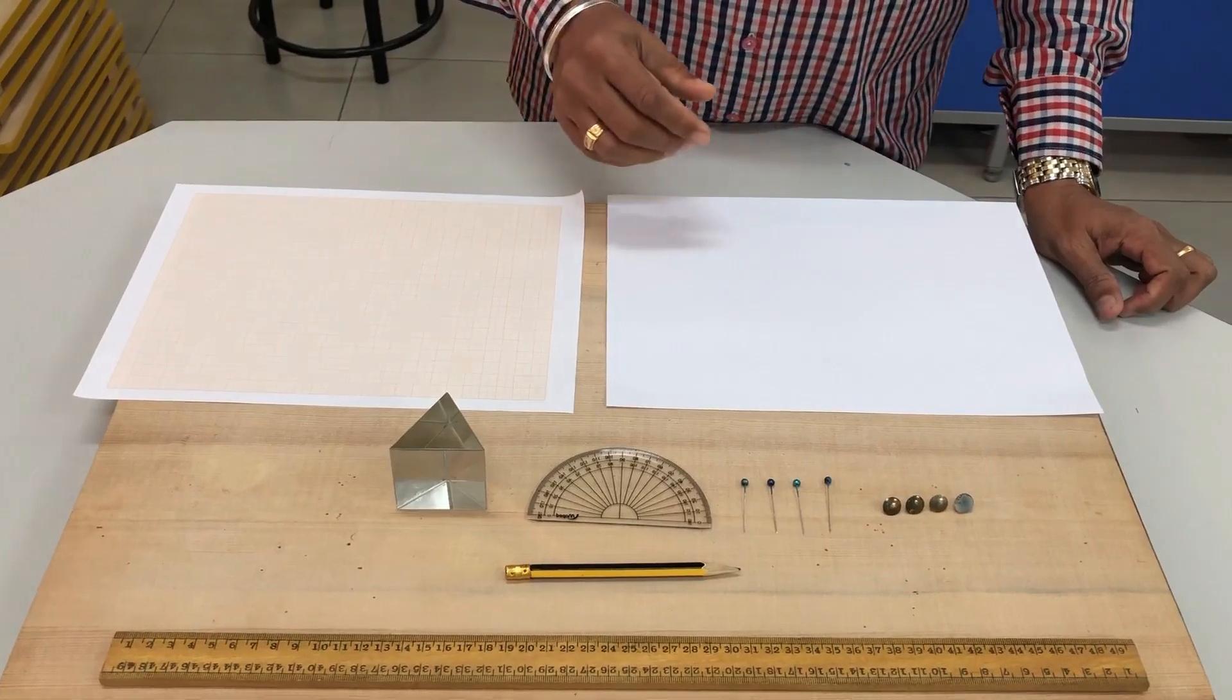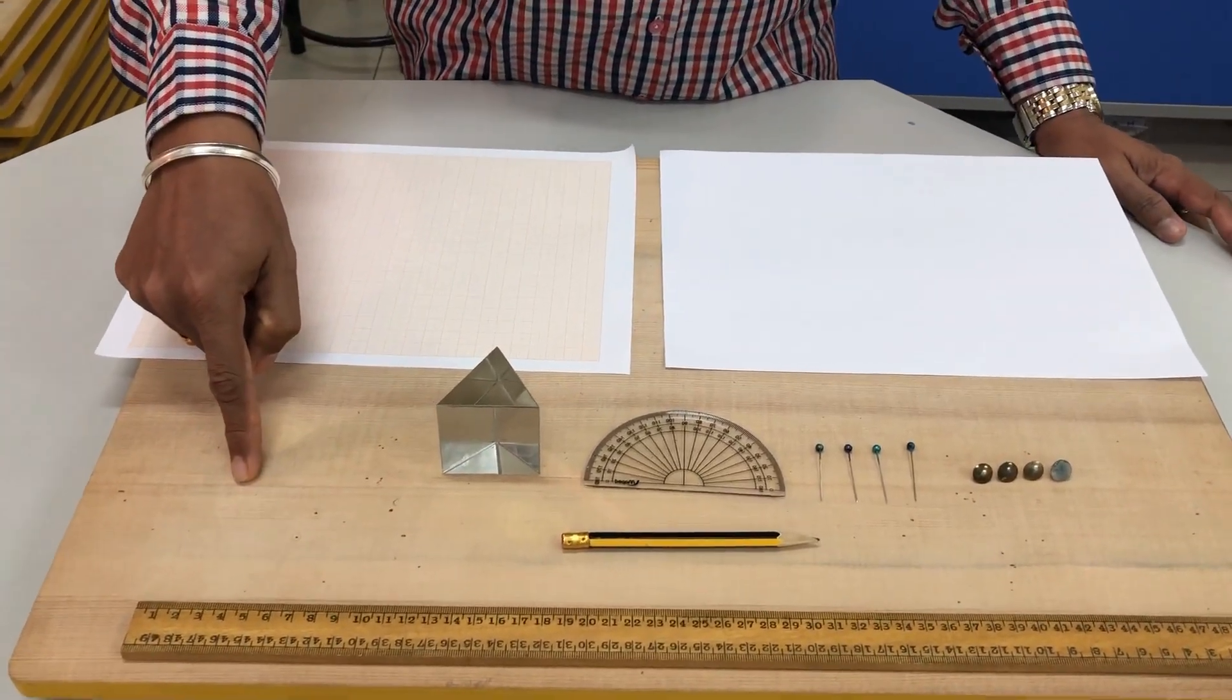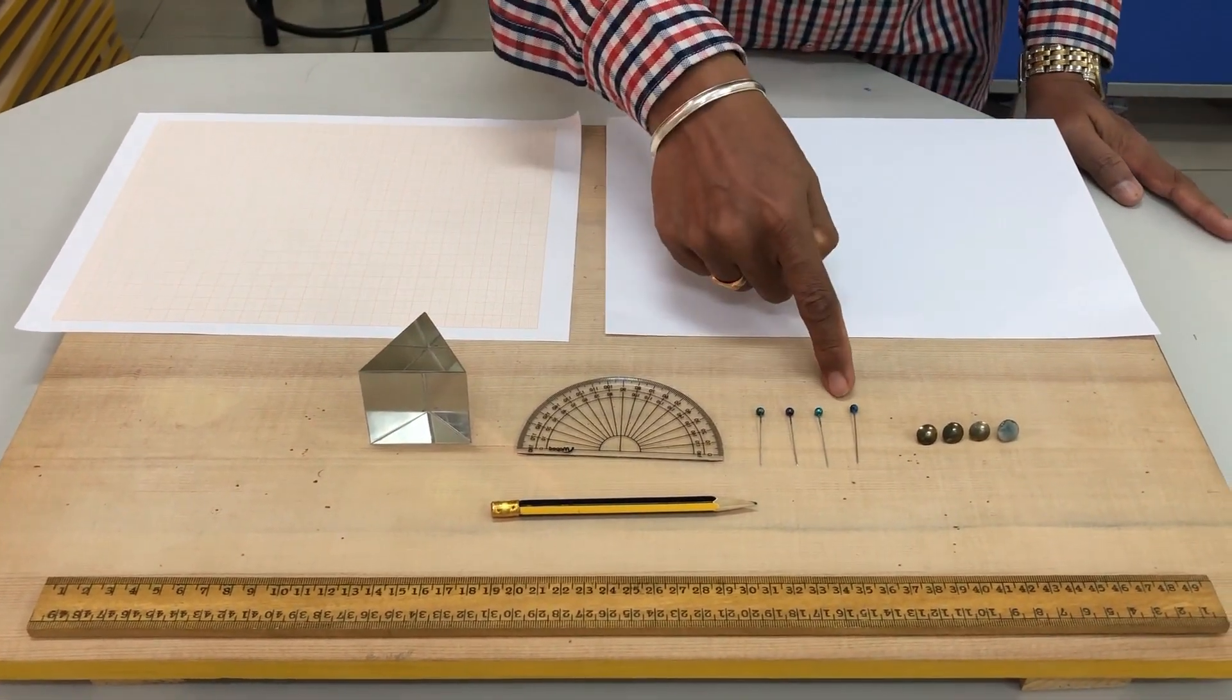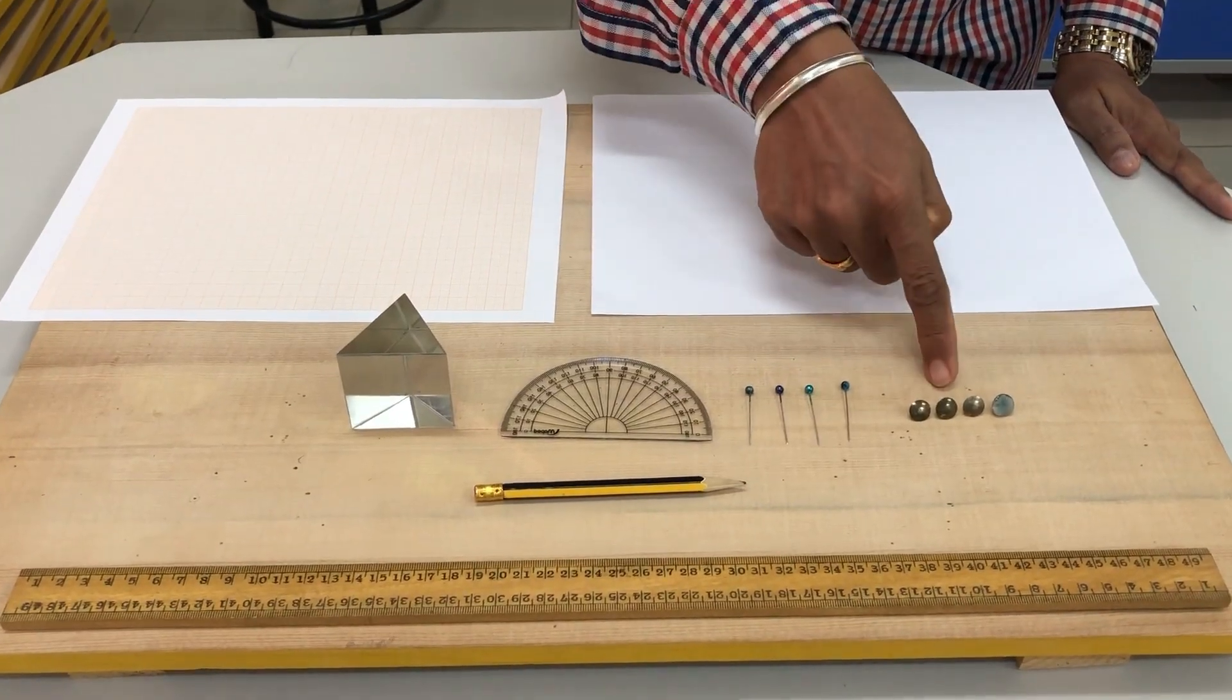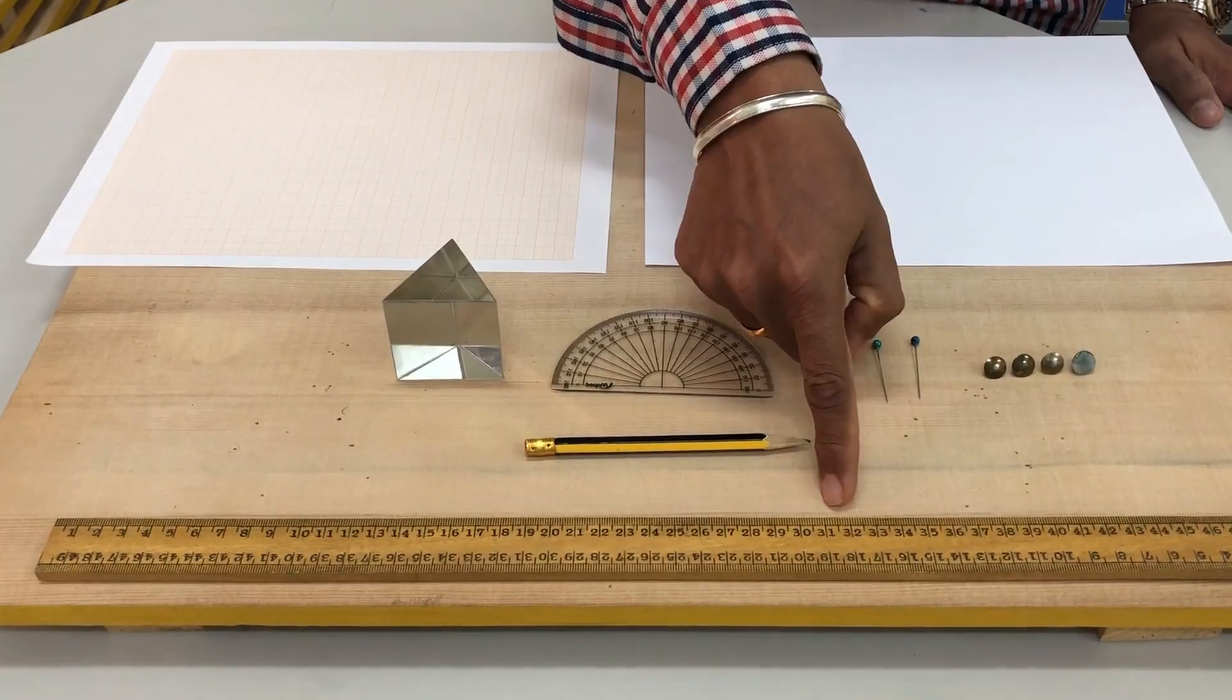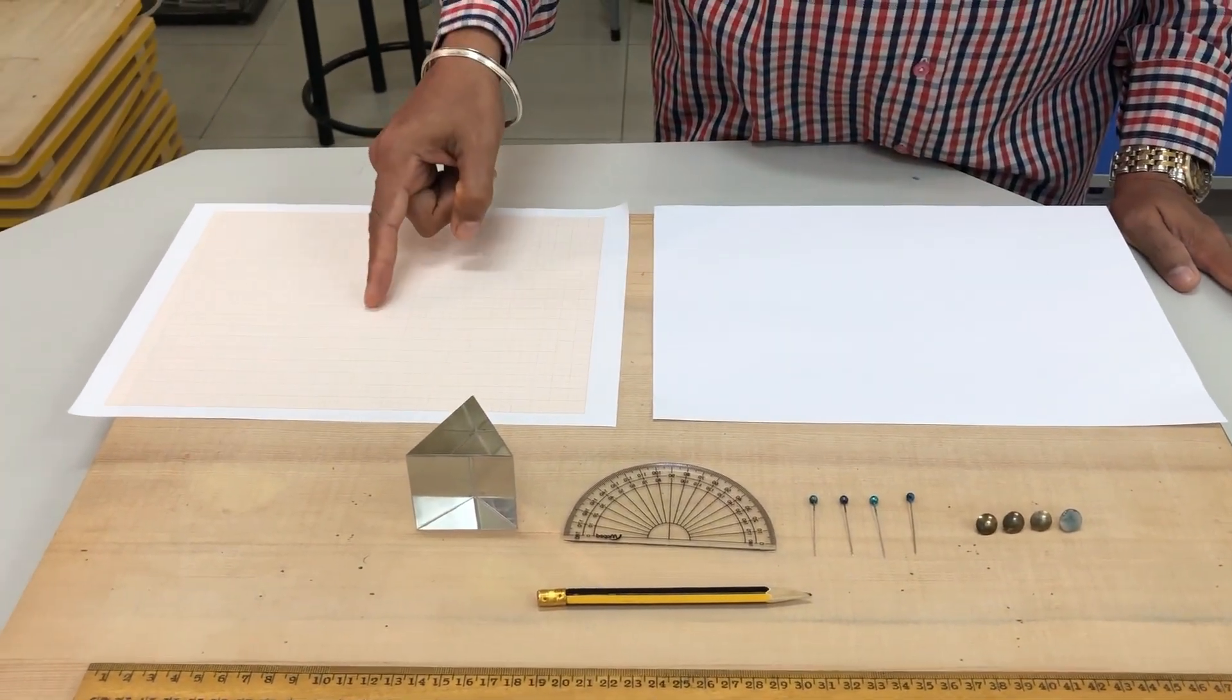The apparatus required: you need a drawing board, prism, protractor, drawing pins, bell pins, a pencil, half meter scale, a white sheet of paper and a graph paper.